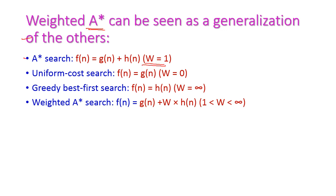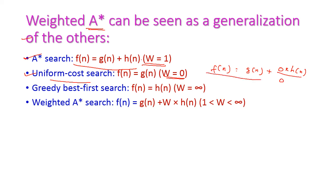If the weight value w equals 1, this is called A* search: f(n) = g(n) + h(n). If the weight value w equals 0, this is uniform cost search: f(n) = g(n) + 0·h(n) = g(n). For greedy best-first search, f(n) = h(n), which occurs when w equals infinity. And if w is greater than 1, this is called weighted A* search.